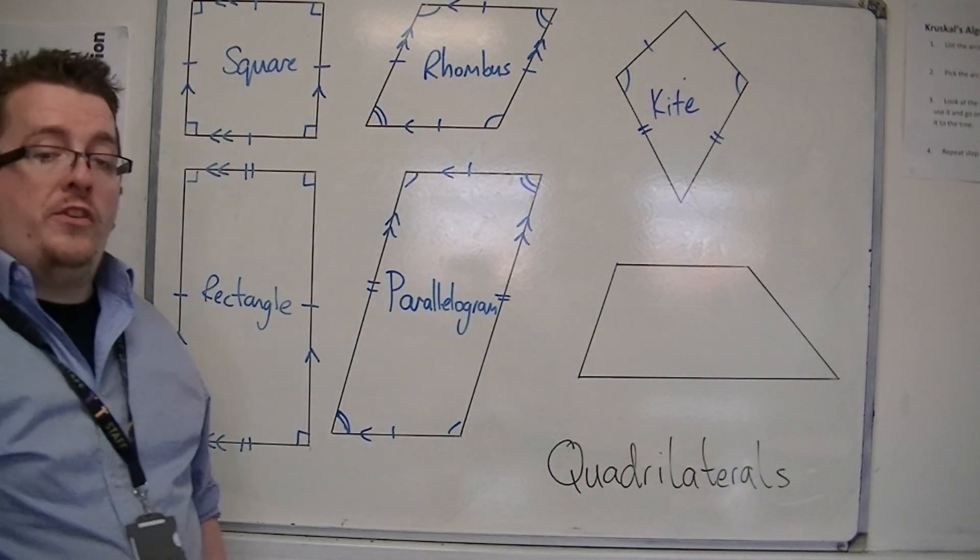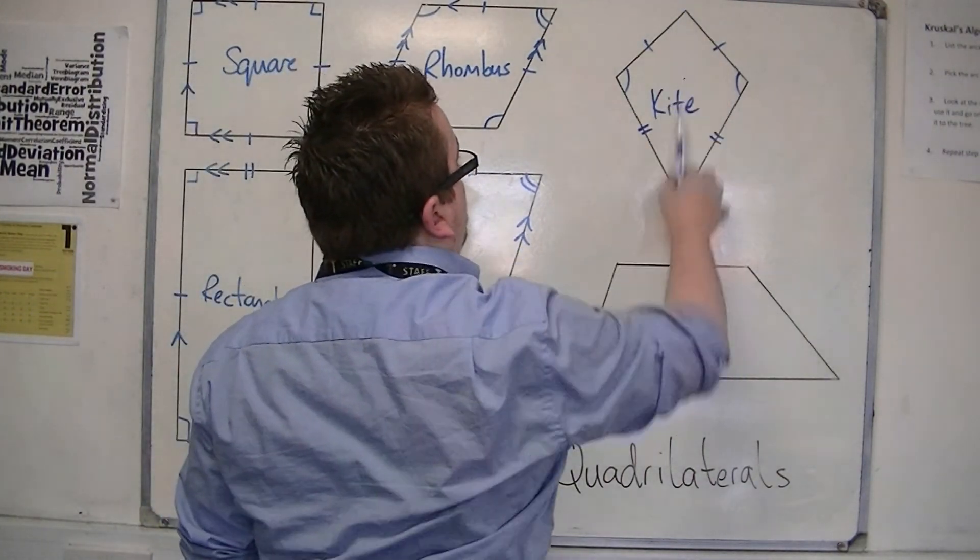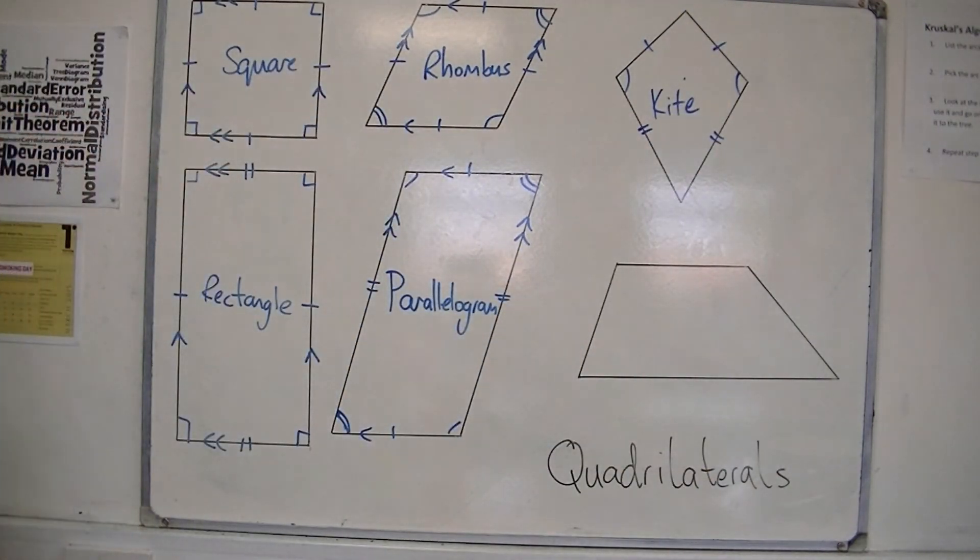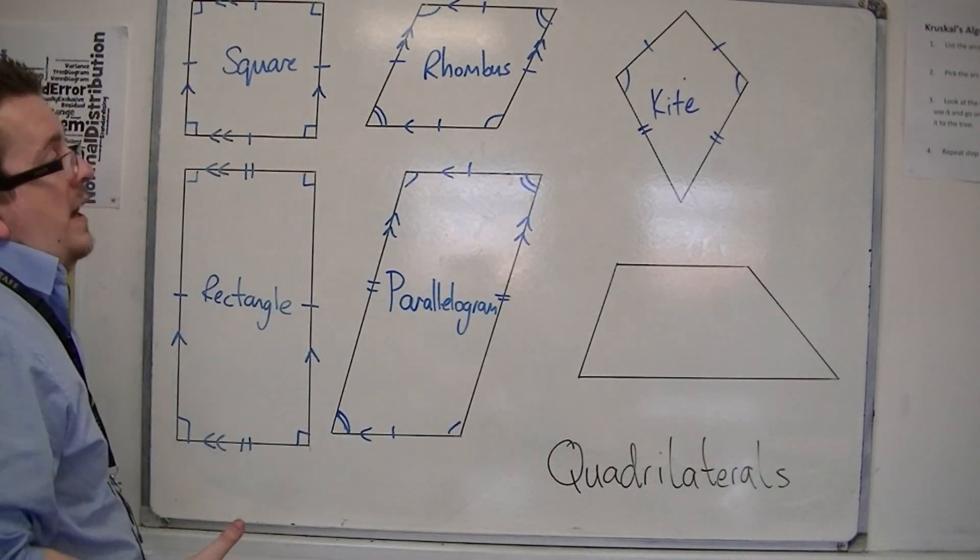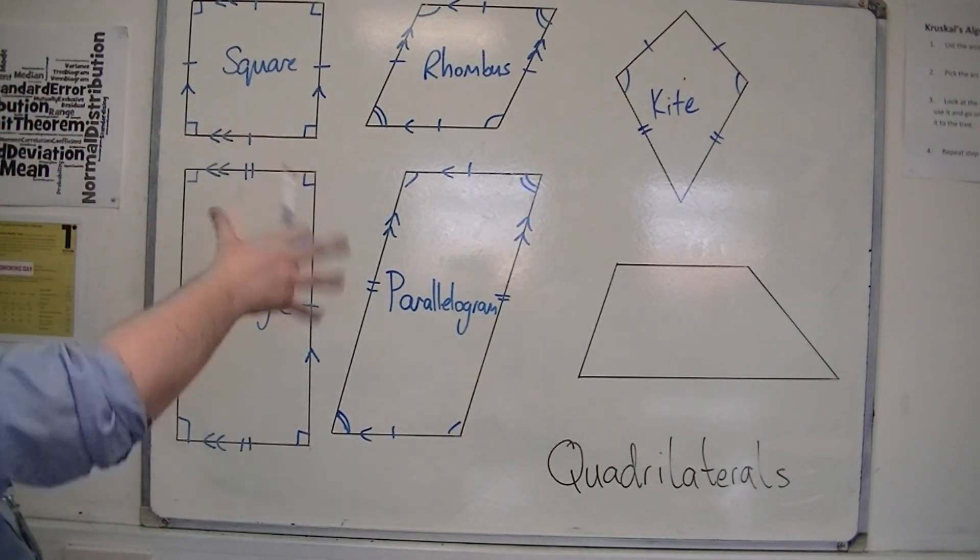Lines of symmetry, it just has the one going down the middle. And order of rotation, it only has, well, one. It will fit onto itself once.